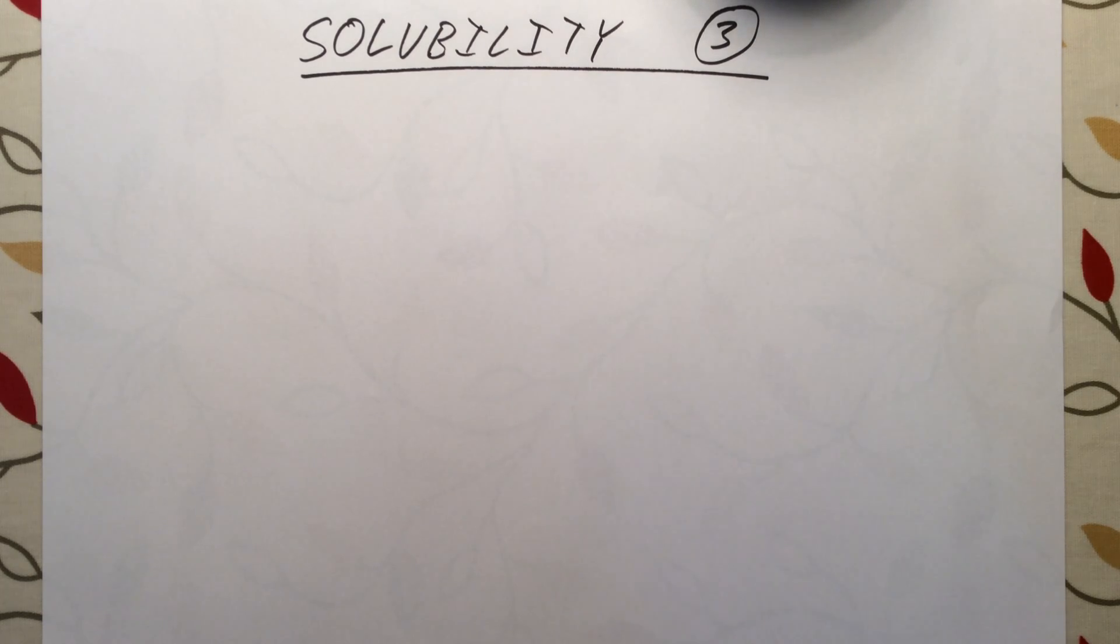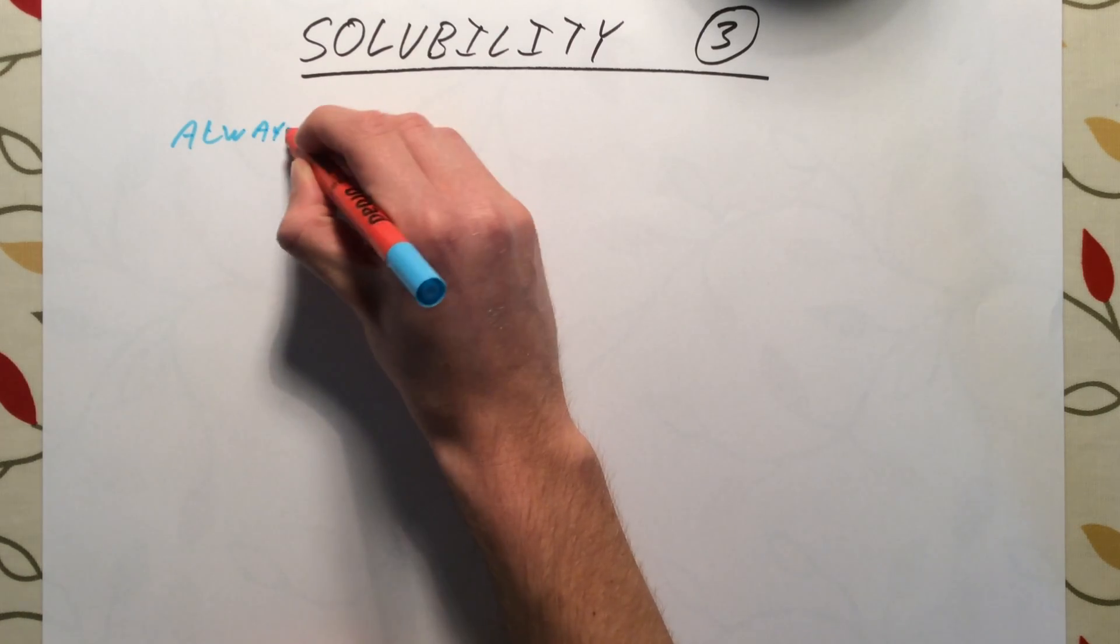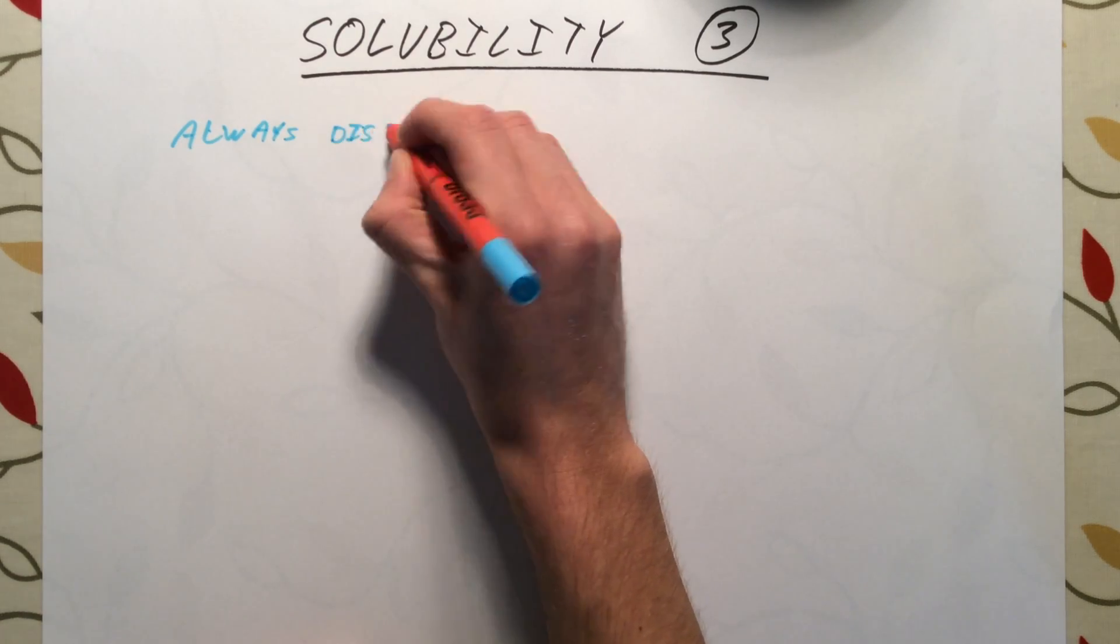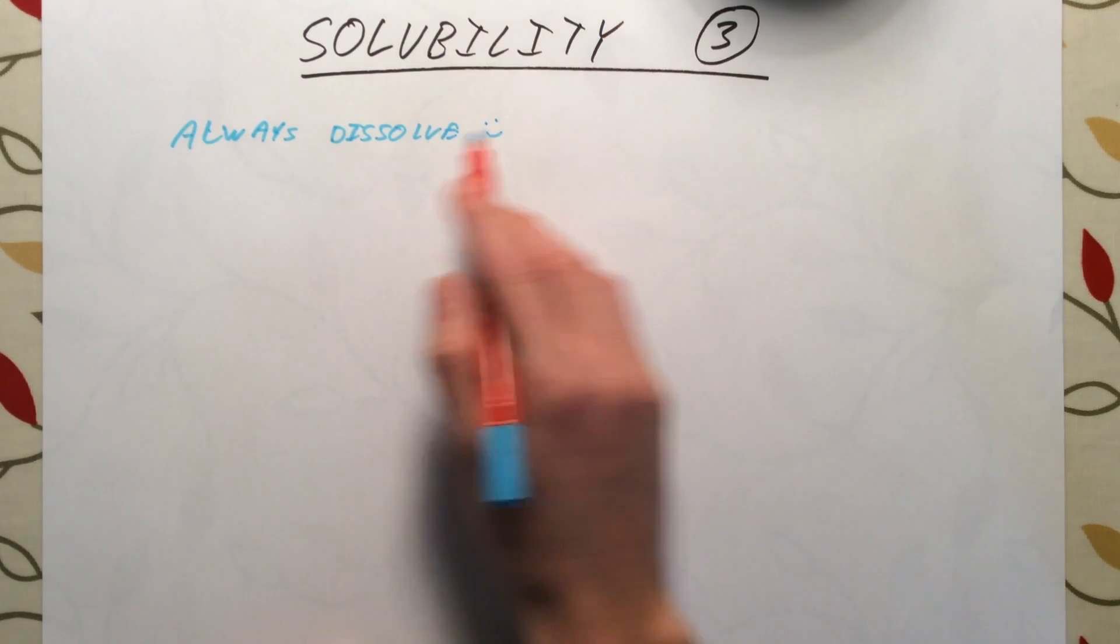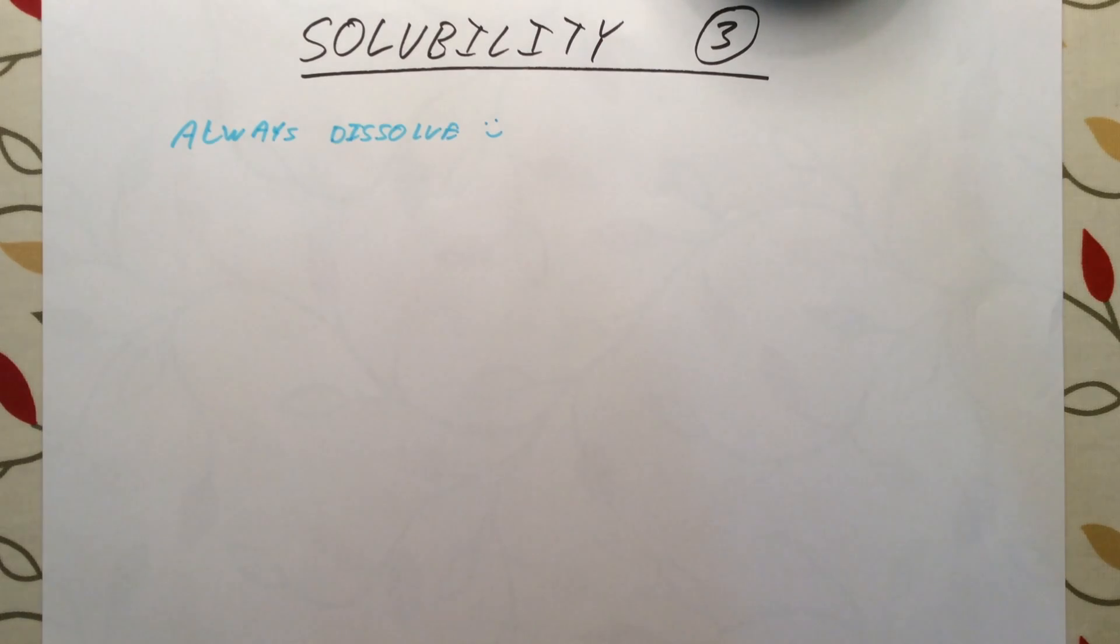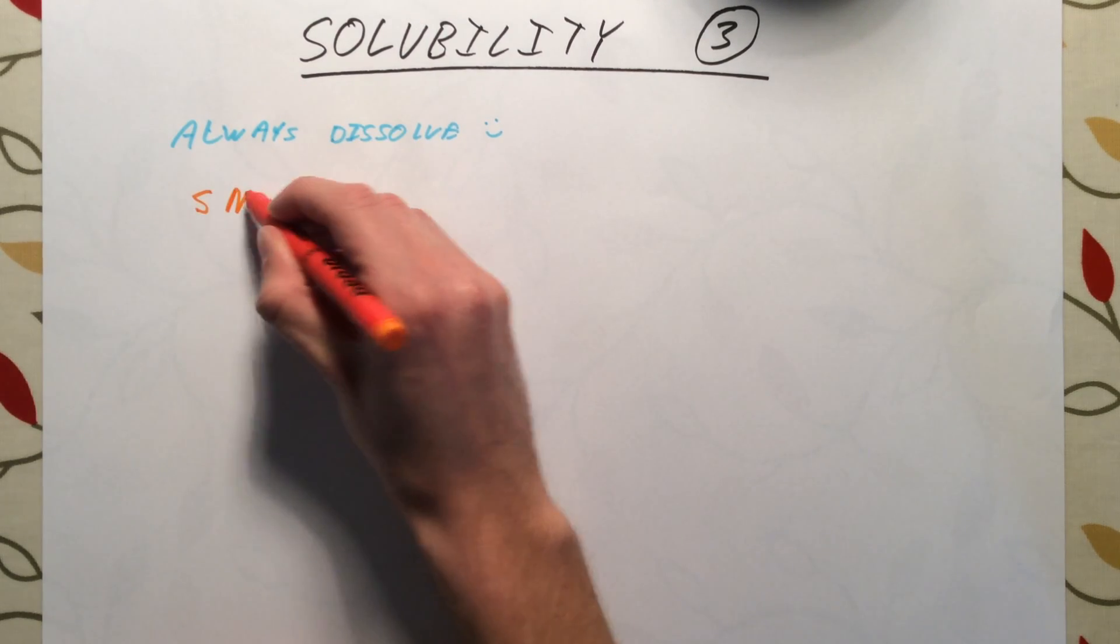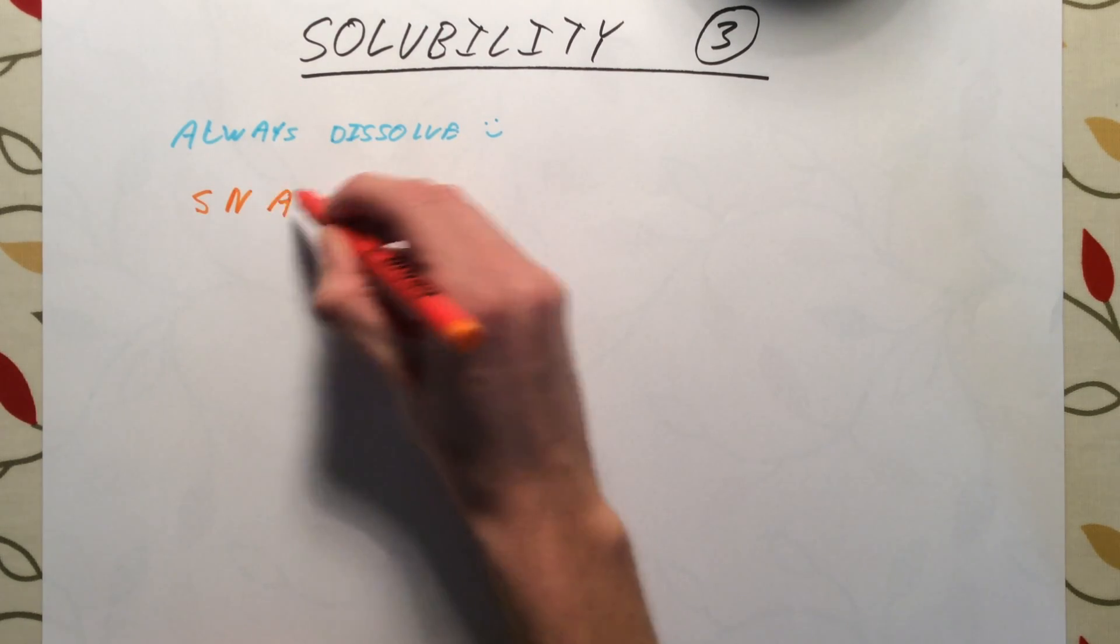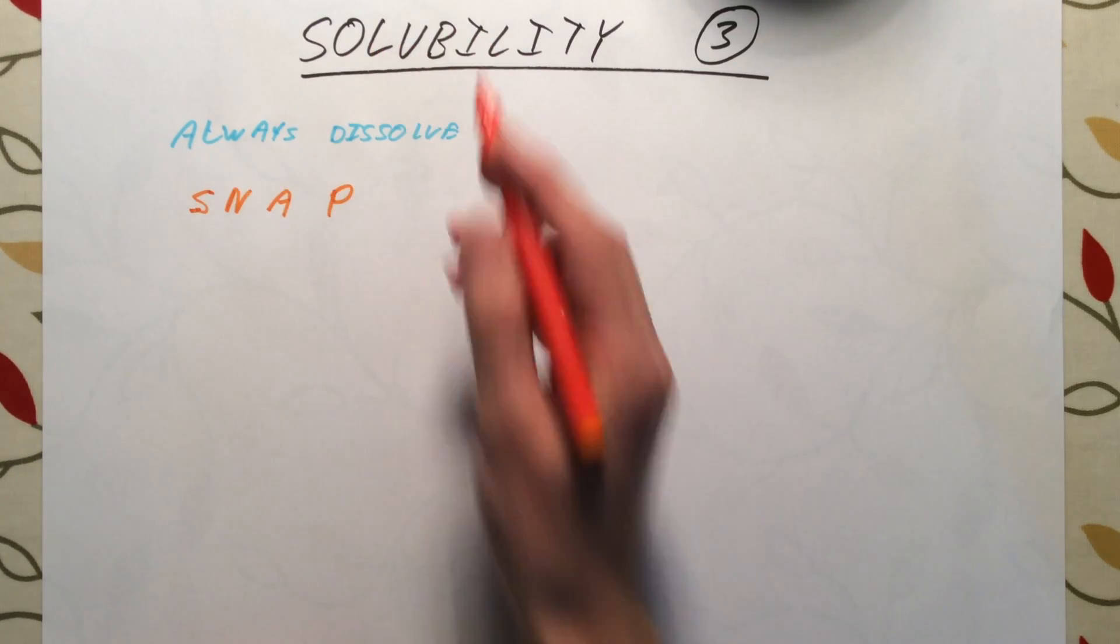There are two types of ionic compounds or salts when it comes to solubility. First off, there are those which always dissolve. These ones are nice and easy to remember. They are always soluble in water. Easy way to remember these is to remember the mnemonic SNAP. If you remember SNAP, you're going to get these right.